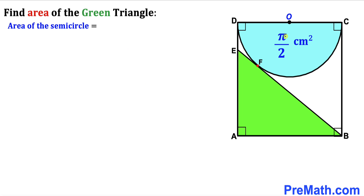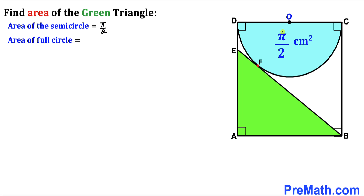We know that the area of the given semicircle is π/2 centimeter square. The area of the full circle is going to be twice that, so we multiply by 2. The 2s cancel out, so the area of the full circle is π.